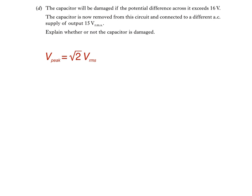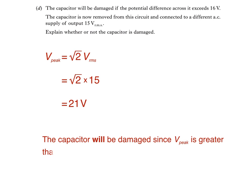V peak is equal to root 2 multiplied by V RMS. So in this case, we get root 2 times 15 is equal to 21 volts. Since this peak voltage is greater than 16 volts, the capacitor will actually be damaged.